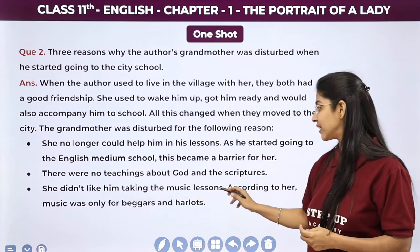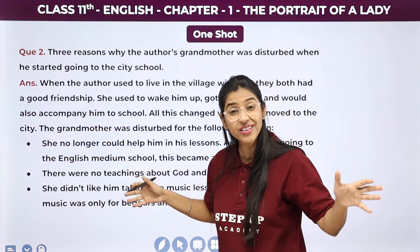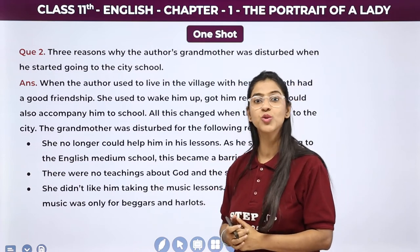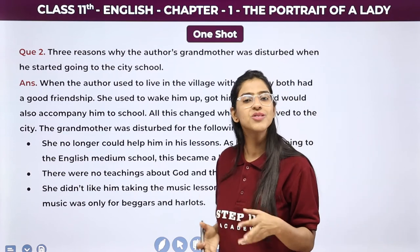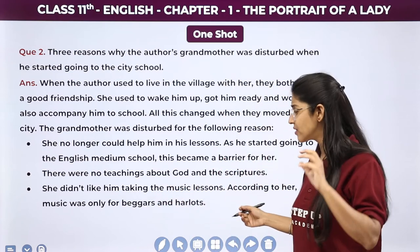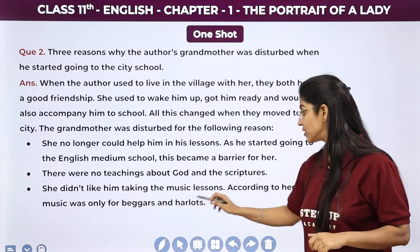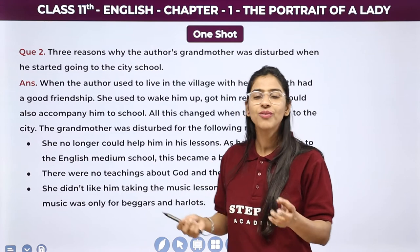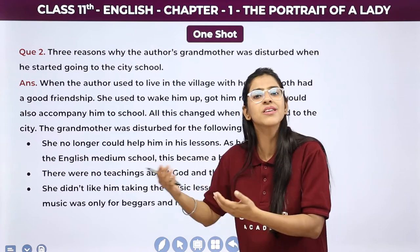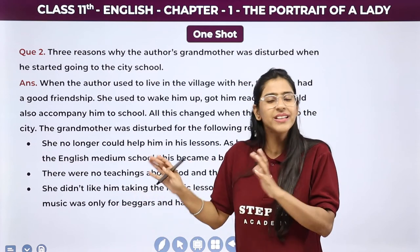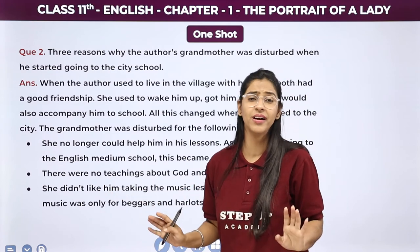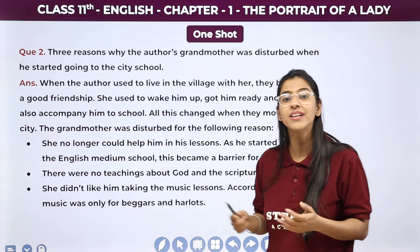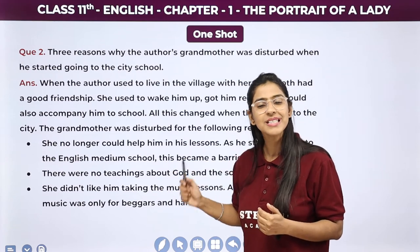The third reason — she didn't like him taking the music lessons. Grandmother ko yeh cheiz to bahut hi annoying, bahut hi weird lagti thi. Jab Khushwant Singh ghar aate the school se aur grandmother poochti thi aaj kya padha, to ek baat Khushwant Singh ne bataya ki aaj humein music ke lessons padhaaye gaye — toh yeh cheiz to unko bahut hi weird lagi. According to her, music was only for beggars and her lords — unko lagta tha jo music hai wo decent section of the society ko belong nahi karta, yeh sirf lower class ya beggars ke liye banaya gaya hai. So she was very against this. These were the three points jis ki wajah se grandmother kaafi dukhi thi jab Khushwant Singh city school mein jaane lage.